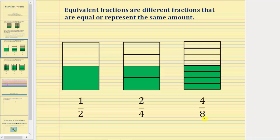Notice how we have three different fractions, but the amount shaded is the same, so these are three different fractions that are equal, and therefore all three are equivalent fractions. Now starting with one-half, notice how to get two-fourths, we can multiply the numerator and denominator by two.